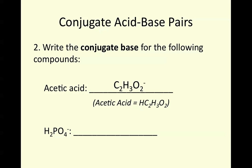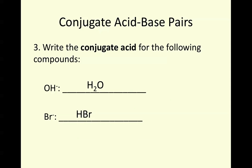For a second example, to write the conjugate base, this acid has to donate one of its protons away, leaving us with HPO4²-. For writing the conjugate acid, hydroxide — as a base — will gain or accept a proton to become H2O. Similarly, acting as a base, a species will accept a proton, so its conjugate acid should have the addition of one proton in the formula.